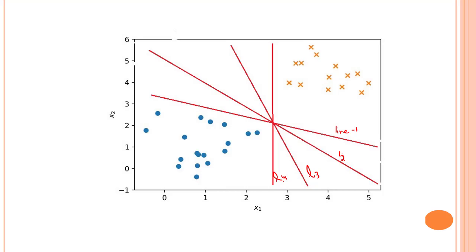The SVM algorithm is based on selecting the best line — the best line which will help us separate out the two classes. That best line is basically the decision boundary, which will help us determine which class any new incoming point belongs to. The best decision boundary is known as the hyperplane. The SVM algorithm finds the closest points to the line from both classes — these points are known as support vectors.